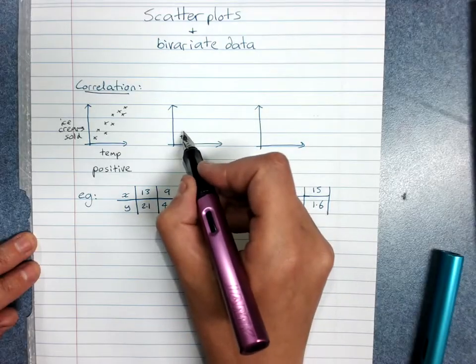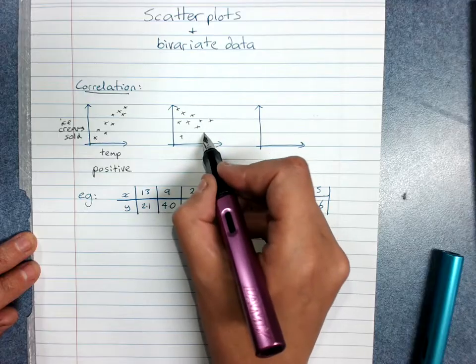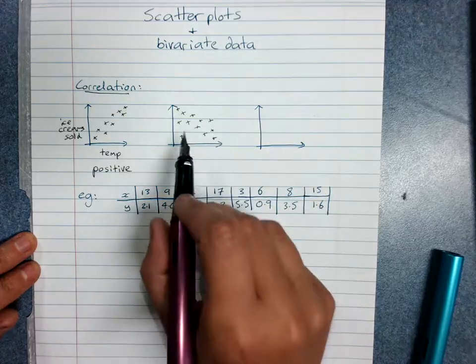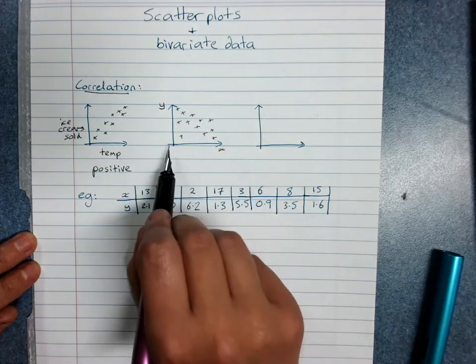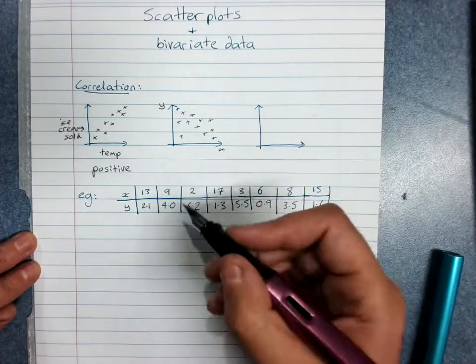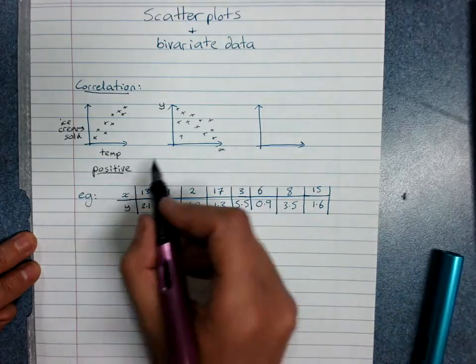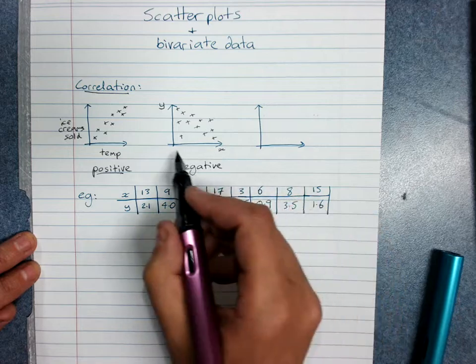Whereas this would be considered quite a weak correlation, and you can see that this is negative. As x increases, y decreases, but not as strongly. So this is a negative correlation and it's fairly weak.